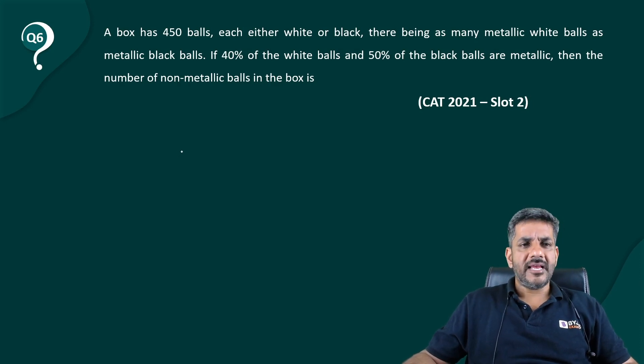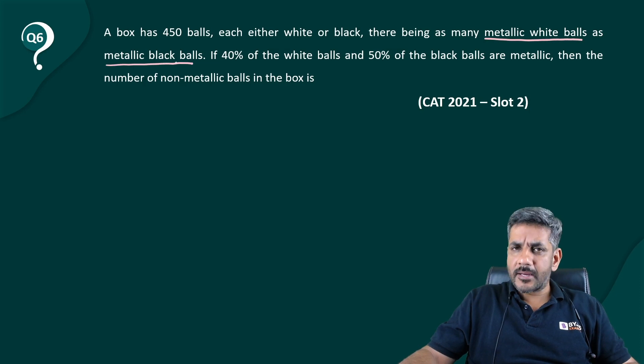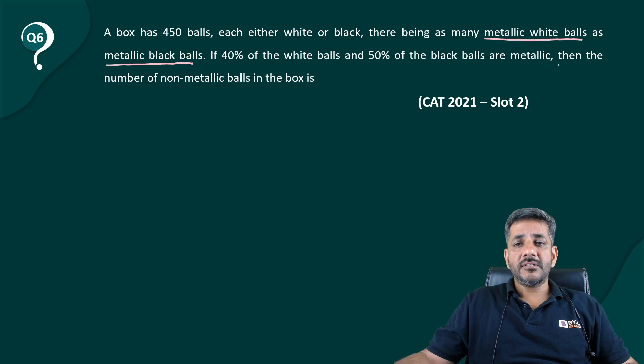as many metallic white balls as metallic black balls. So the number of metallic white balls is the same as the number of metallic black balls. If 40% of the white balls and 50% of the black balls are metallic, then the number of non-metallic balls in the box is what? So we have